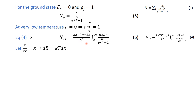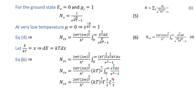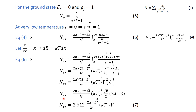We now have to solve this integral. This type of integral was already encountered when discussing the Debye theory of specific heat, and it equals Gamma(3/2) times Zeta(3/2). The value of Gamma(3/2) is (√π)/2, and Zeta(3/2) equals 2.612. By rearranging, we can write the number of excited bosons in terms of equation number 7.